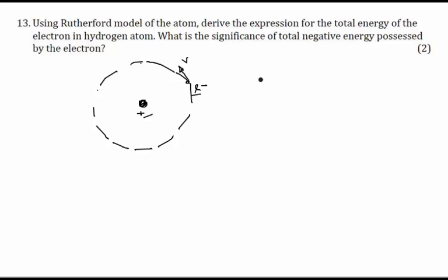First of all, the Rutherford model of the atom considers the atom as an electrically neutral sphere consisting of a very small, massive, and positively charged nucleus at the center, surrounded by the revolving electrons in their respective dynamically stable orbits.